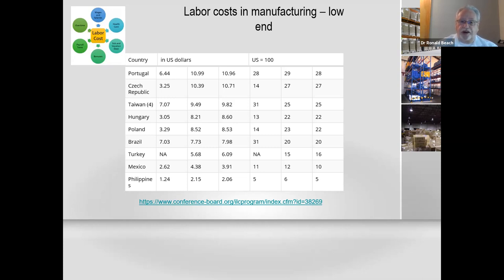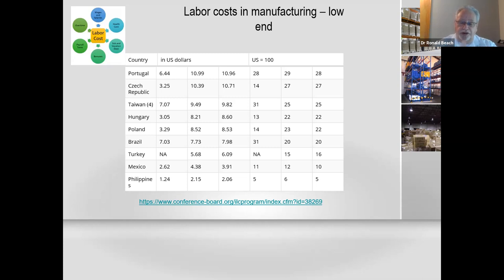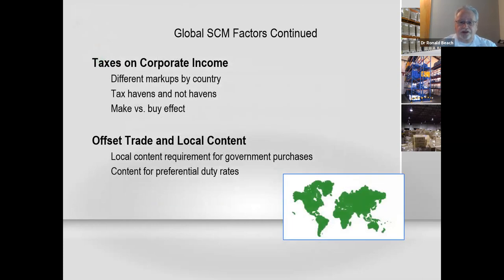When looking at the low-cost end, you're also considering technology differences, education levels, and availability. Then there's taxation on corporate income, which has a lot to do with corporations deciding which country will be their home base, because that drives your customs requirements.